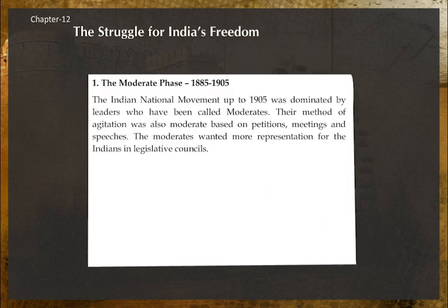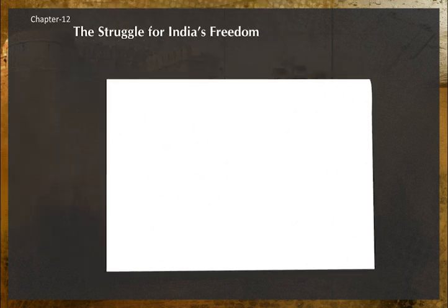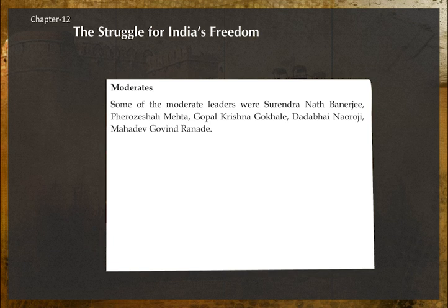The moderate phase, 1885 to 1905: The Indian national movement up to 1905 was dominated by leaders called moderates. Their method of agitation was moderate, based on petitions, meetings, and speeches. The moderates wanted more representation for Indians in legislative councils. Some moderate leaders were Surendranath Banerjee, Ferozeshah Mehta, Gopal Krishna Gokhale, Dadabhai Naoroji, and Mahadev Govind Ranade.